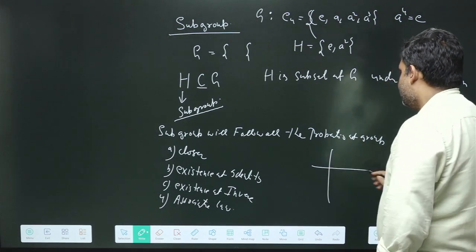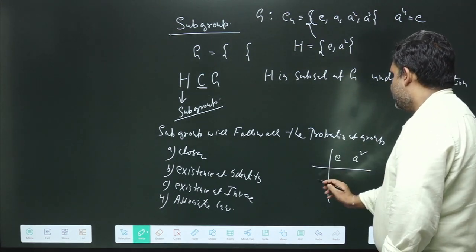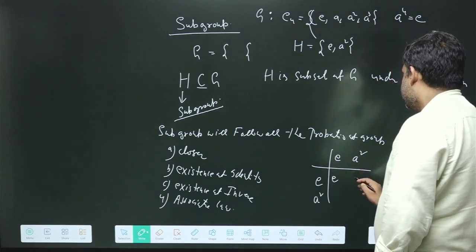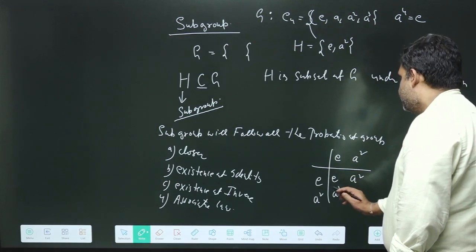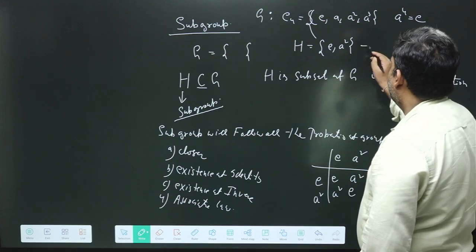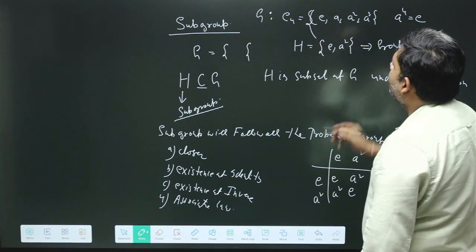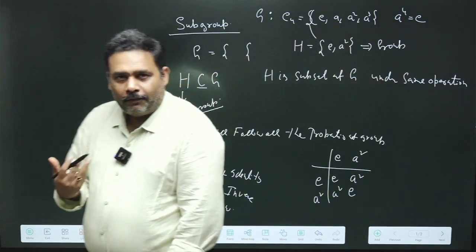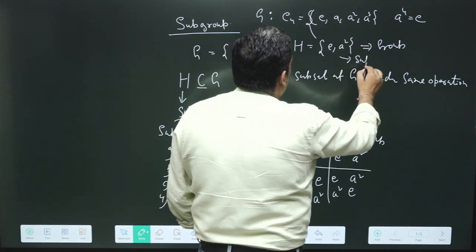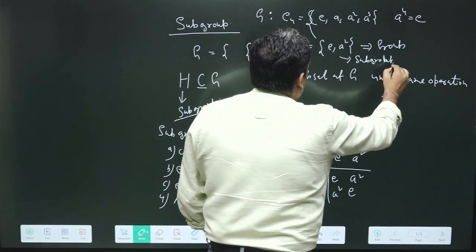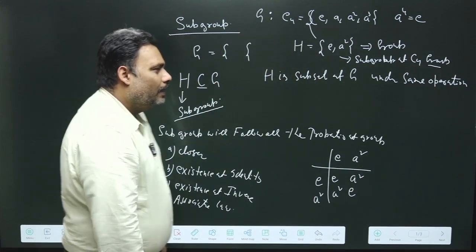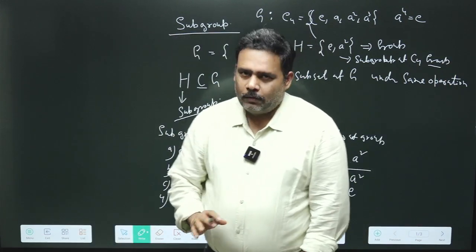So what do we have? We can make a multiplication table with E, A² as rows and columns. E operation E is E, E operation A² is A², A² operation E is A², and A² operation A² equals A⁴ which equals E. So yes, this is also a group. H is a subset of C4 and it is also a group, so this H is basically a subgroup of the C4 group.